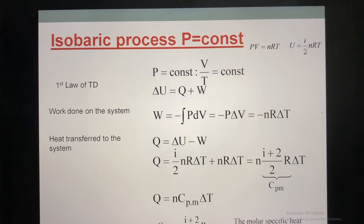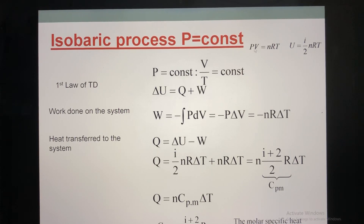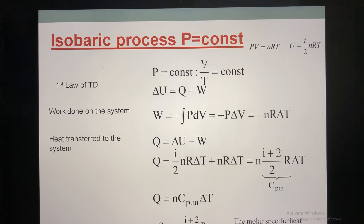Remember that we have two formulas from ideal gas: the equation for ideal gas and the internal energy from ideal gas. Now, if pressure is constant, that means P is constant. So V and T change with respect to time. From here, you have the equation that nRT over V is a constant. In other words, I can write V over T is a constant. This is the equation of the isobaric process.